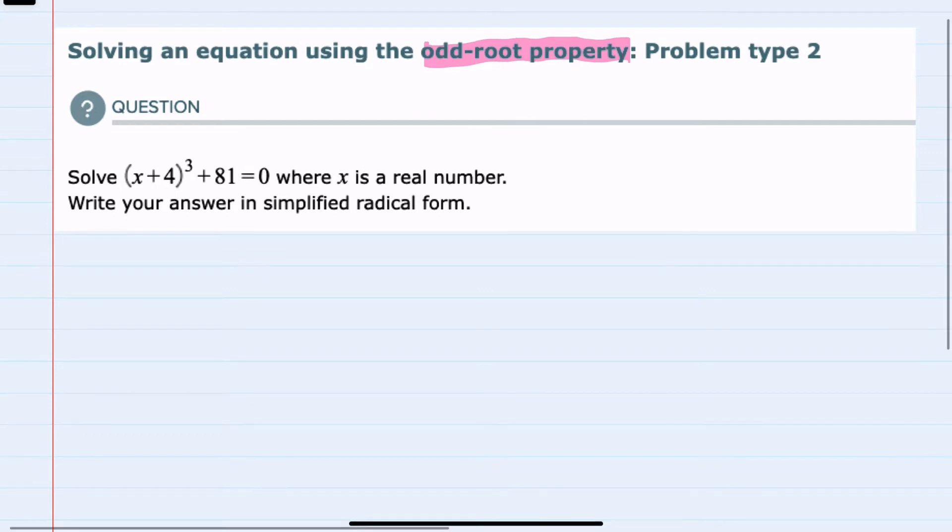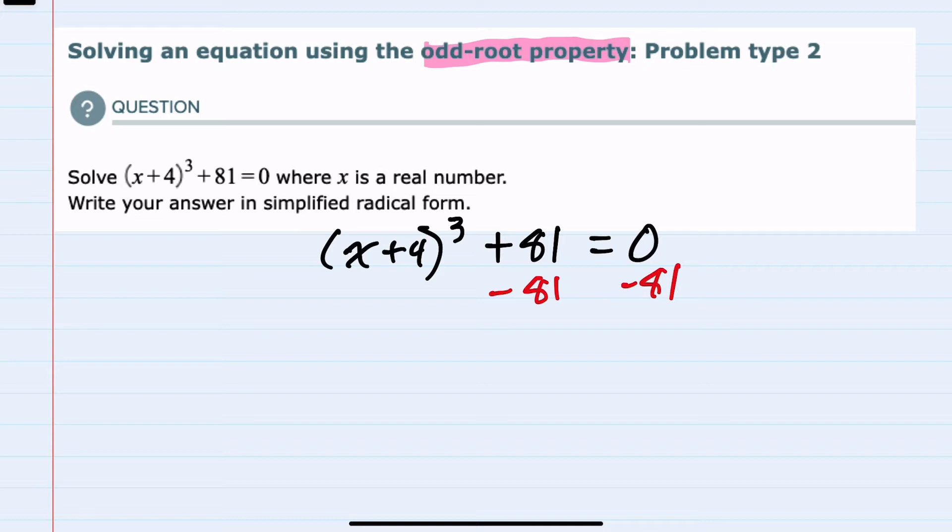The equation we're given is (x+4)³ + 81 = 0. To solve, we're going to isolate x, and to start I can subtract 81 from both sides.